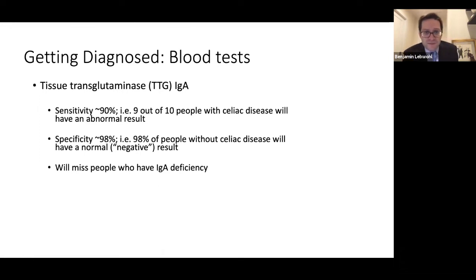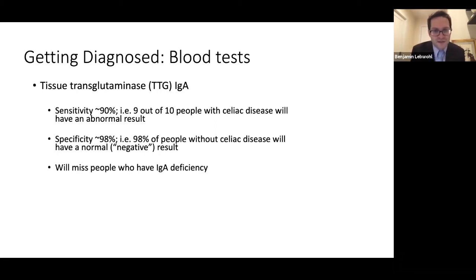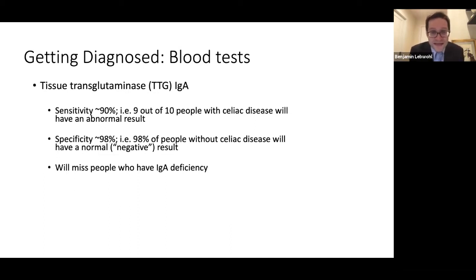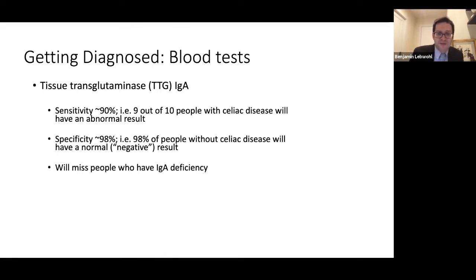So how do you make the diagnosis? It typically starts with a blood test. The blood test with the highest accuracy is the tissue transglutaminase IgA, also known as the TTG. It has a sensitivity of 90%, meaning nine out of ten people with celiac disease will have an abnormal TTG IgA result. It has a specificity of 98%, which means that 98% of people without celiac disease will have a normal or negative result. But it's not perfect — these numbers are not 100%, and particularly this is affected by people who have low or undetectable levels of the antibody class called IgA.